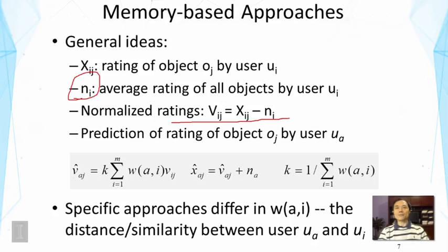The prediction of the rating on the item by another user, the active user u sub a, can be based on the average ratings of similar users. User u sub a is the user we're interested in recommending items to, and we want to know how likely this user will like this object. The idea is to look at whether similar users have liked this object.